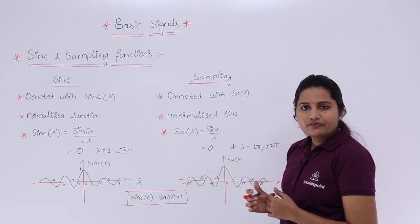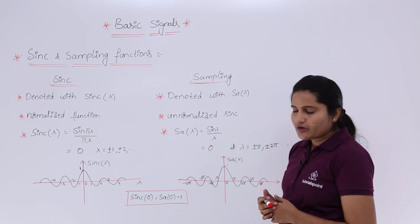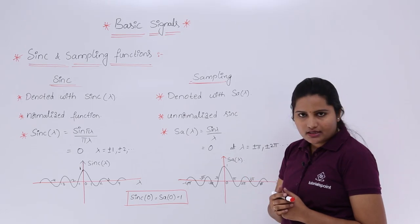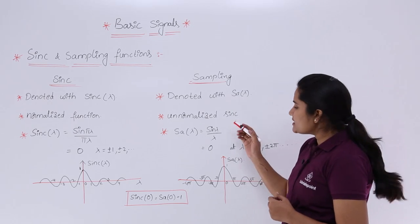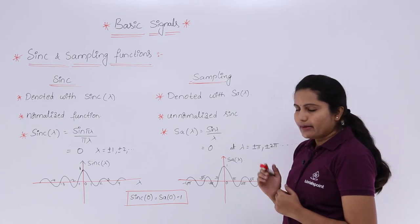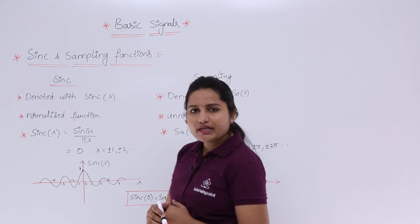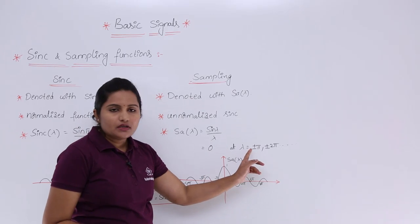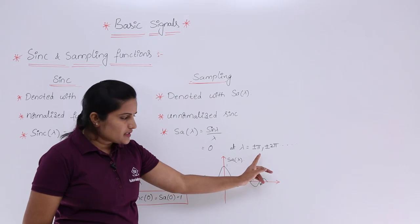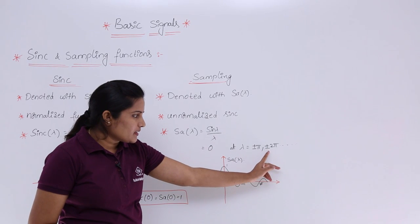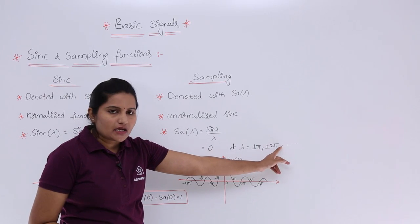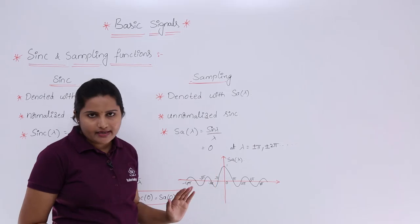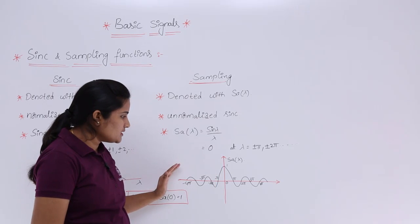The definition of the sampling function is: sa(λ) = sin(λ) / λ. This is also equivalent to 0 for lambda equal to plus or minus pi, plus or minus 2pi, and so on up to plus or minus n·pi.